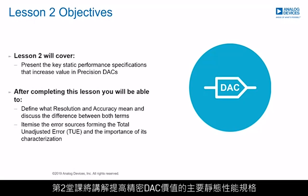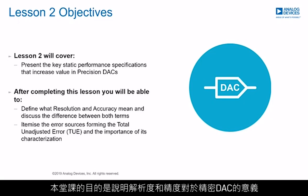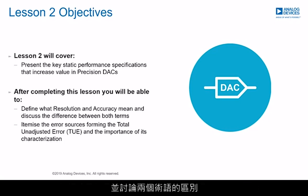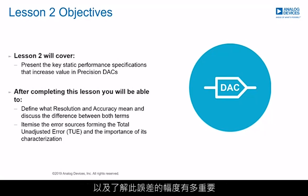Lesson 2 covers the key static performance specifications that increase value in precision DACs. The objectives are to define what resolution and accuracy mean for precision DACs, discuss the differences between both terms, itemize the error sources that form the total unadjusted error, and understand the importance of knowing the magnitude of this error.